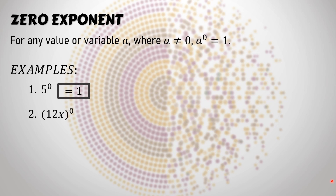Second example: 12x quantity raised to zero. As you can see, the zero exponent is outside the parentheses. This means we distribute the exponent zero to 12 and x, so it becomes 12 raised to zero times x raised to zero. Then we simplify: 12 raised to zero is one, and x raised to zero is one, so one times one is one.